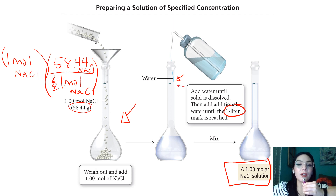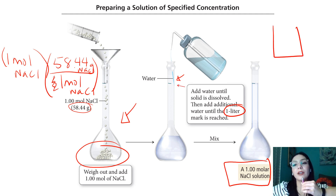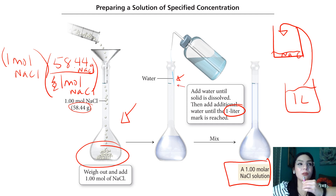Some of the space in the volumetric flask has already been taken by the solid, which ensures a very accurate volume. This is more accurate compared to if you had just a beaker and added your solid, then poured in a separate liter of water — that method would be less accurate than using a volumetric flask.